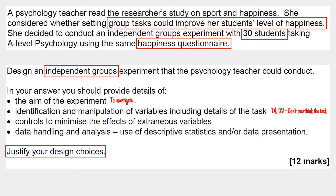For the second bullet point, where you're being asked to talk about the variables and the details of the task, you're effectively being asked to talk about the IV and the DV, and then you need to think of an appropriate task for 30 psychology students to do. Don't overthink it, but you do need to provide a good amount of detail on what they're going to do. When it comes to minimizing the effects of extraneous variables, remember you generally have two main ways to deal with them: randomization and standardization.